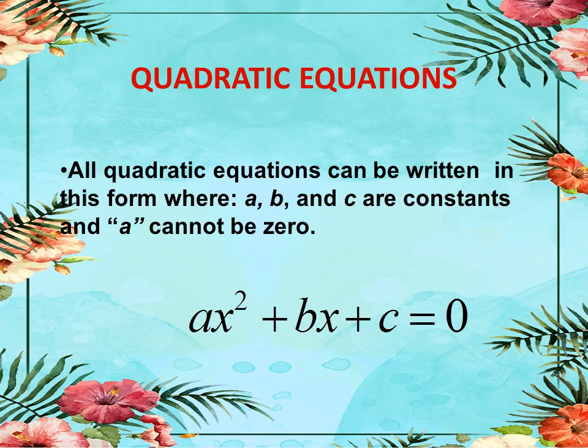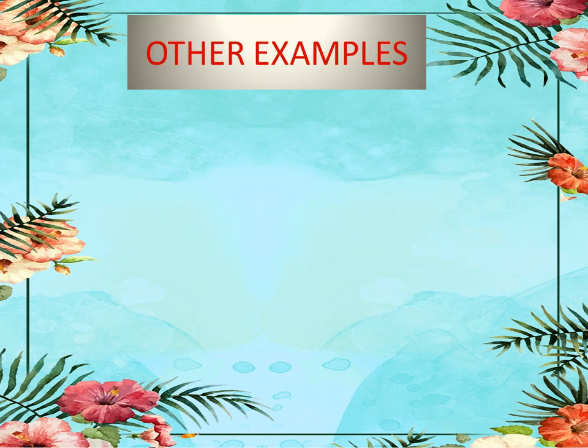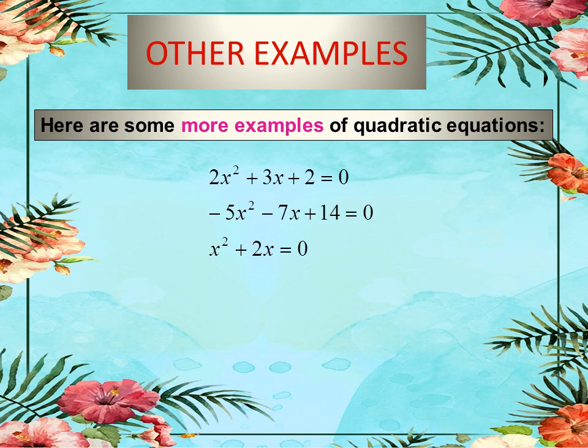All quadratic equations can be written in this standard form, where a, b, and c are constants, x is the variable, and 2 is the power of the variable. Note that a cannot be equal to zero.